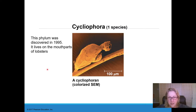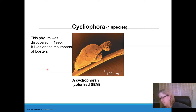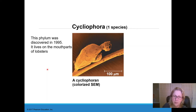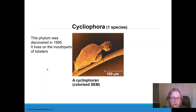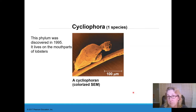Cycliophora is a recently discovered phylum — the most recently discovered complete animal phylum outside of those created using DNA. A grad student in Norway or Sweden, examining live lobsters for parasites, discovered a really weird animal living on the mouth of the lobster. It turned out to be so weird it belongs in its own phylum, which DNA has supported. So far it is only known from a couple of species of lobster.